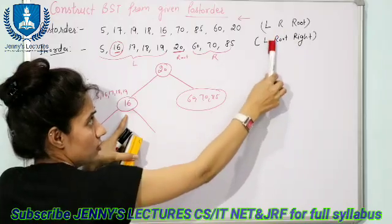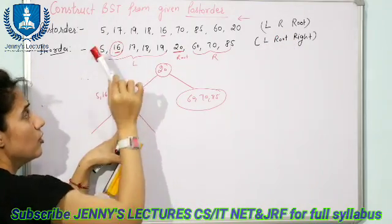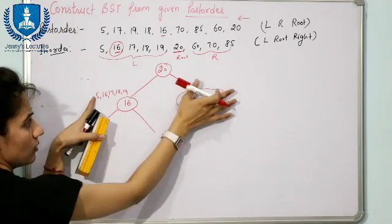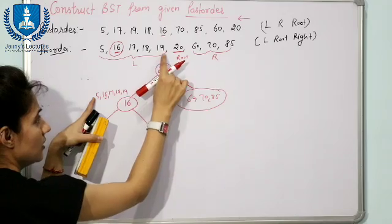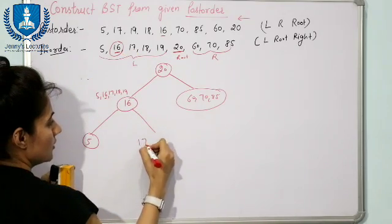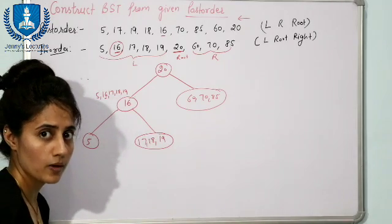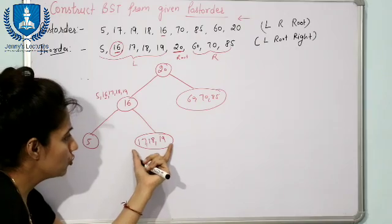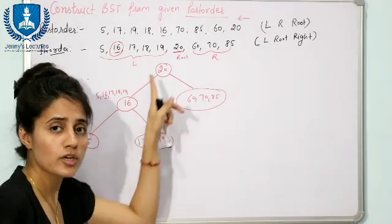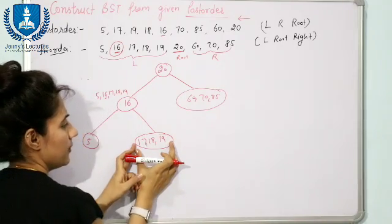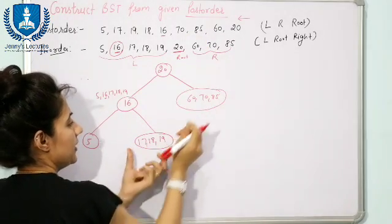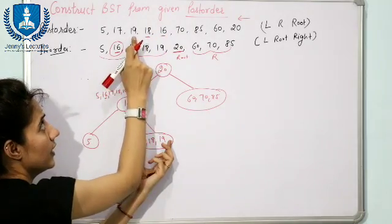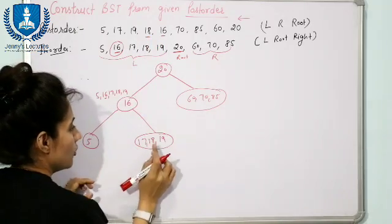Since 5 is a single element, now apply the same rule to {17, 18, 19}. To find the root, check the post-order traversal and traverse from right to left. Out of 17, 18, and 19, we encounter 18 first — 18 is the rightmost. So 18 is the root of this subtree.